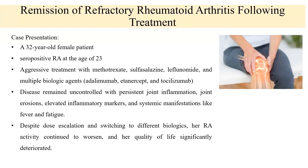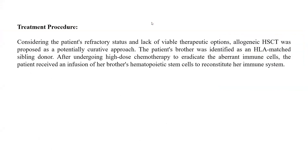Case report two: remission in arthritis patients. A 32-year-old female patient was positive for rheumatoid arthritis at age 23. All standard-of-care drugs and multiple biological agents were given, but there was no resolution — the person did not heal from the condition, and her quality of life was significantly deteriorated. Considering all these factors, they planned to give her stem cell therapy.